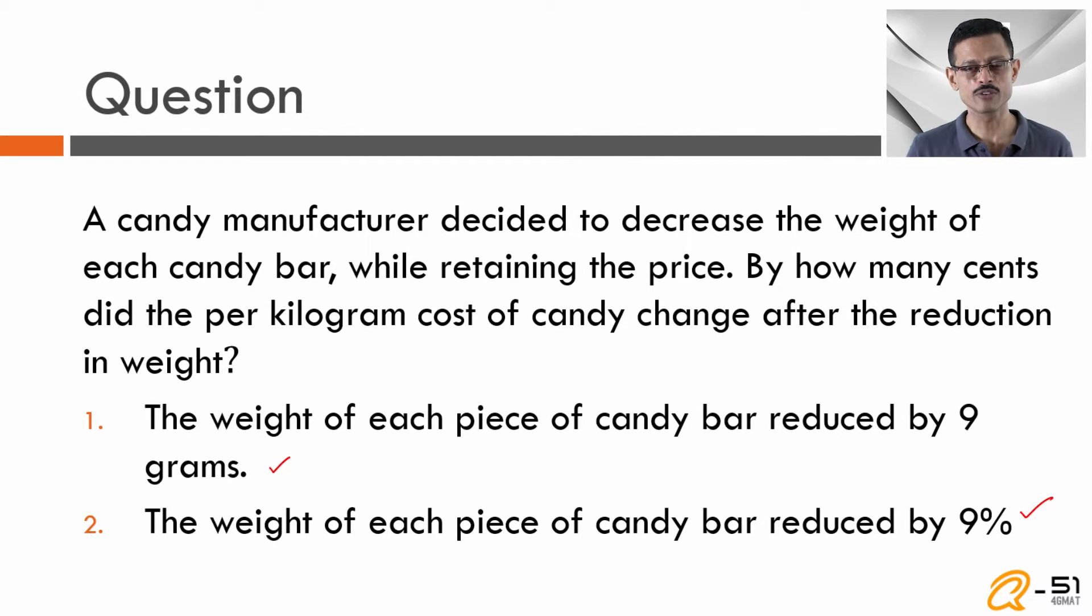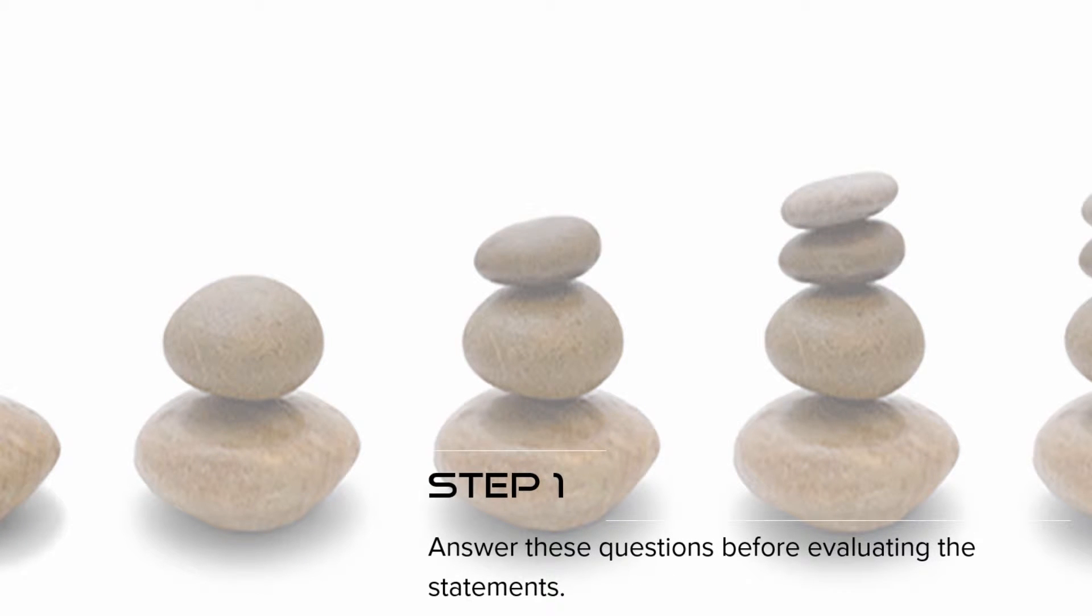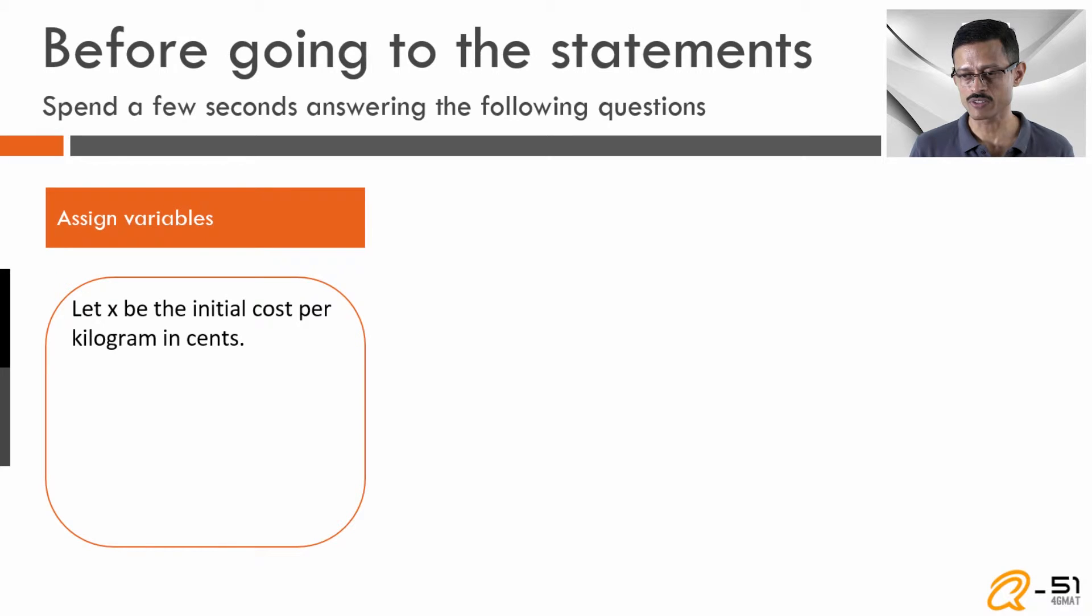We will split solving this question into four steps. Step one: we are going to identify what we actually need to find out. We will assign variables, find out when the data is sufficient and when it is not sufficient.